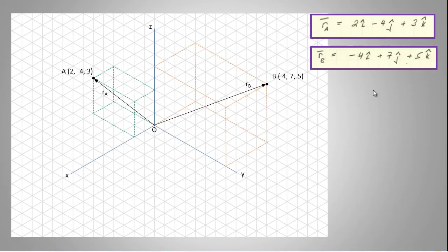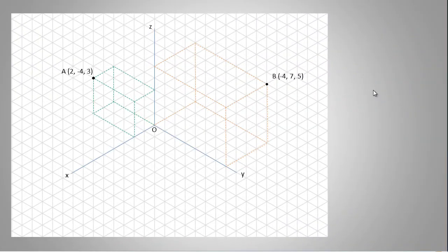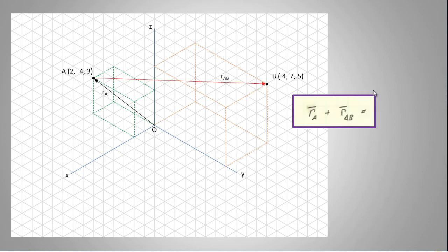So at this point, we've established vectors RA and RB. Now what we want to do is utilize vector RA, and to this we're going to add vector RAB, which is the vector that goes from A to point B. By completing the vector triangle, we get the sum RA + RAB = vector RB.